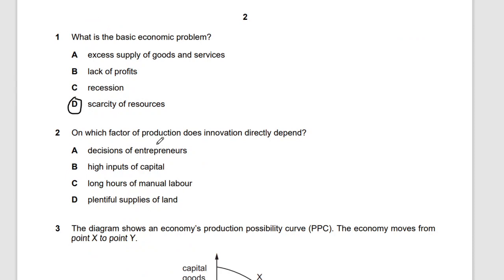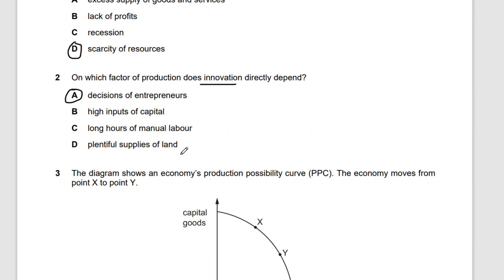Question two: on which factor of production does innovation directly depend? The main keyword is innovation. The answer is decisions of entrepreneurs. Entrepreneurs are simply risk takers — they start up a business and must be innovative to survive in the market. The reward for entrepreneurs is profit.